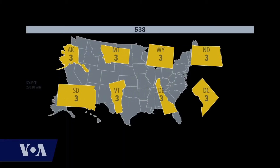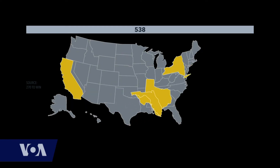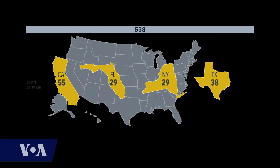Seven states have the fewest number of electoral votes: three — one for the state's U.S. House of Representatives and two for the state's U.S. Senators. The District of Columbia gets the minimum three as well. California, New York, Texas, and Florida have the most electoral votes. The popular vote winner in each state typically gets all of the state's electoral votes.